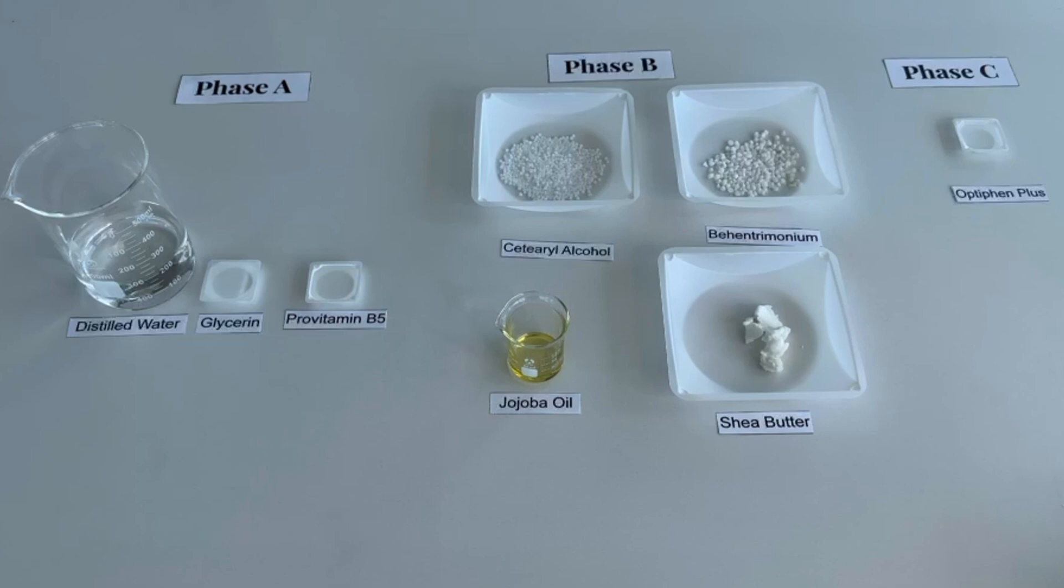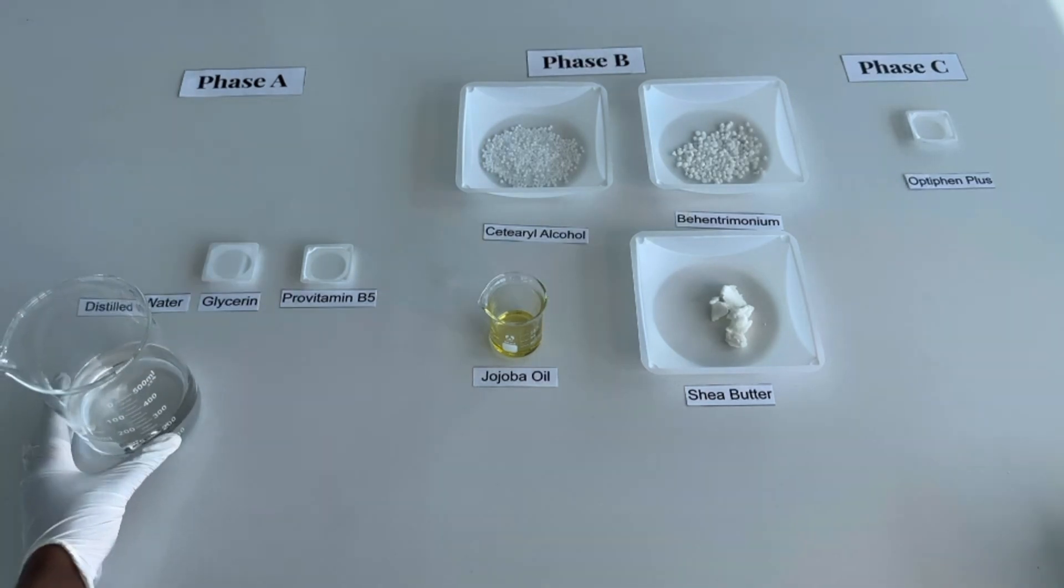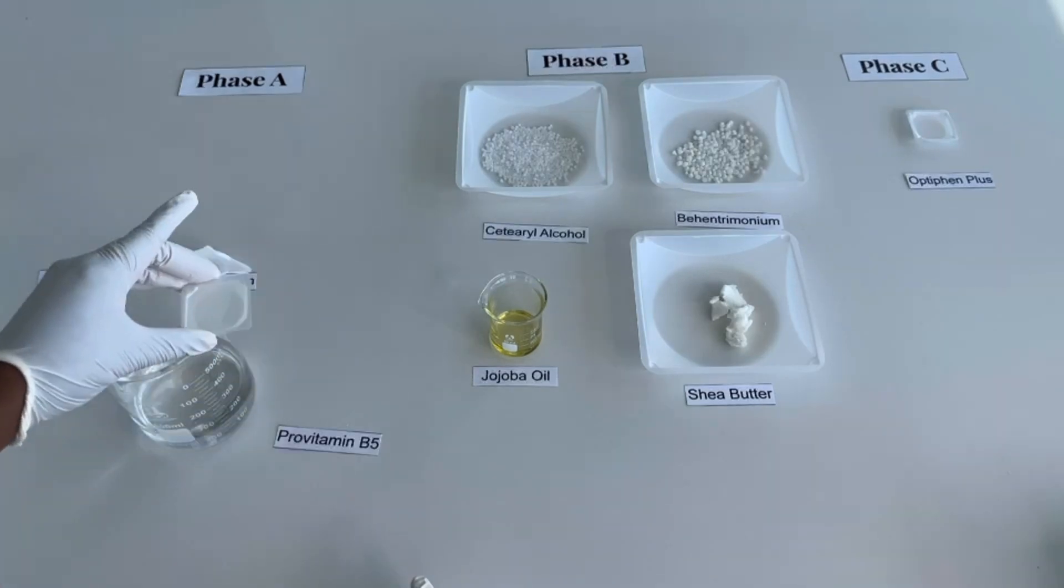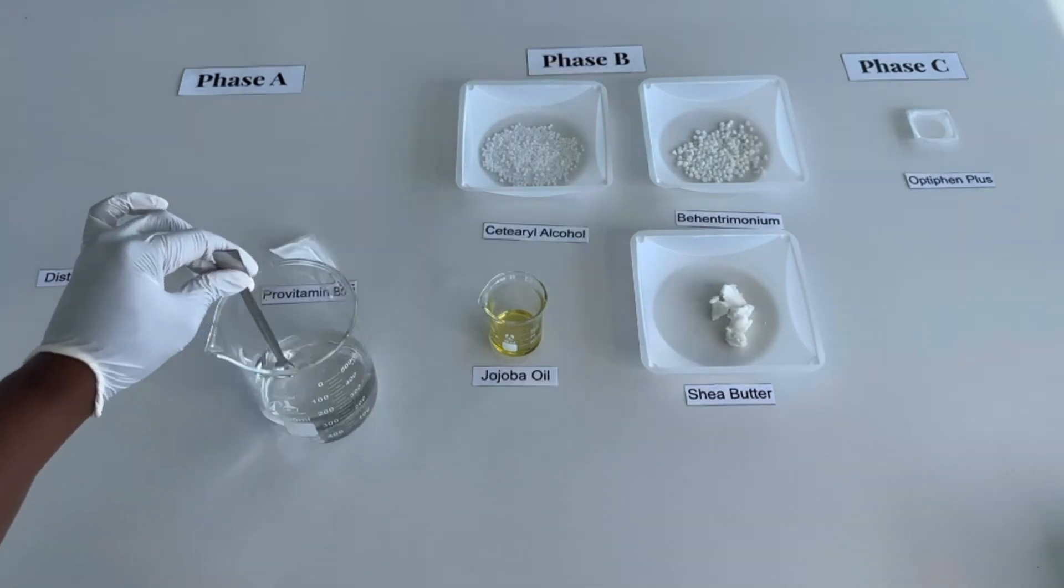Phase C is my cool down phase, so any ingredients that need to be added at a lower temperature go into this phase. So now let's get started. I'll first start with Phase A. To a heat safe beaker, add distilled water, then I'll add glycerin and pro vitamin B5 for moisture. I'll thoroughly combine these ingredients and then set it off to the side.